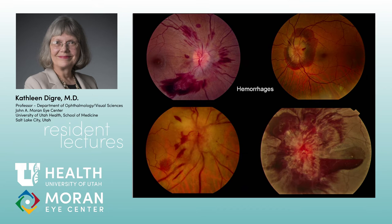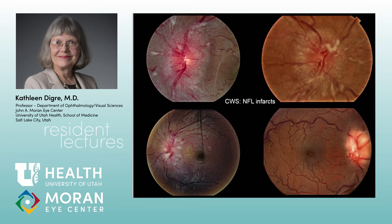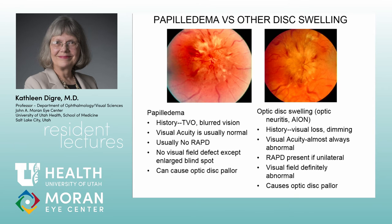Hemorrhages of any type can happen with papilledema or any disc swelling — pre-retinal, subretinal, nerve fiber layer hemorrhages. The same applies to cotton wool spots. I always look at the macula with every swollen nerve to check for deposits in Henle's layer suggesting a macular star. These findings can help you understand the nature of the swelling.